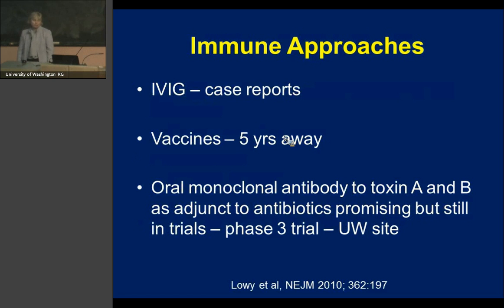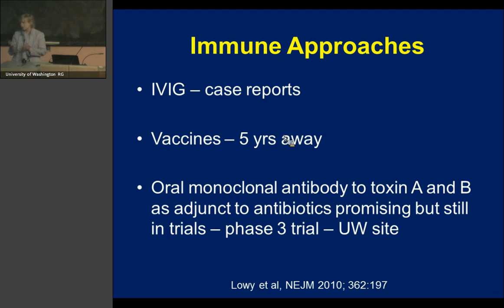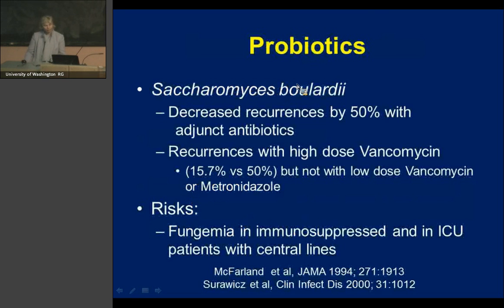Immune-based approaches: there are case reports of IVIG working for recurrences. Several companies are working on a C. diff vaccine — probably five years away at best. Very exciting is an oral monoclonal antibody against toxin A and B, published in the New England Journal: given as an adjunct to antibiotics, it definitely decreased recurrence rates in the recurrent group. A phase 3 trial is opening at this institution next week.